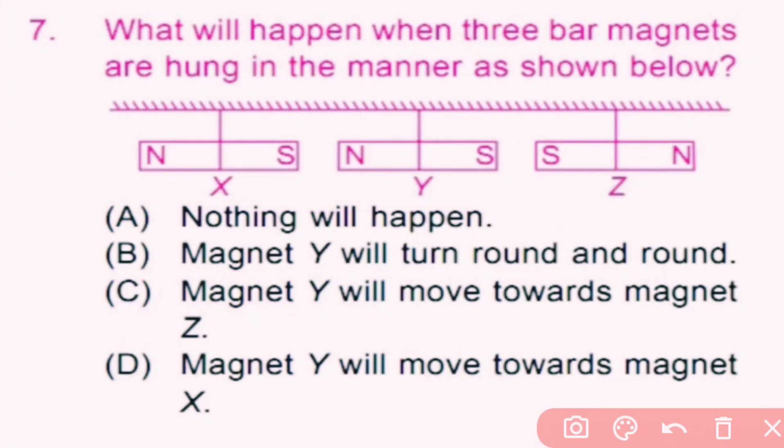Question number 7. What will happen when three bar magnets are hung in the manner as shown below? Option A, nothing will happen. Option B, magnet Y will turn around and around. Option C, magnet Y will move towards magnet Z. Option D, magnet Y will move towards magnet X. D is the correct answer.